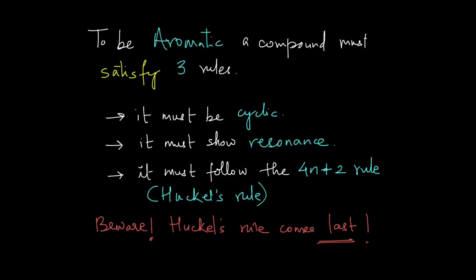To be aromatic, a compound must satisfy these three conditions. It must be cyclic — that means you should be able to see a ring. It must show resonance. And the third condition is it must follow the 4n+2 rule, also known as the Huckel's rule. Many students just see the compound and go for the 4n+2 rule, but please note that this rule comes last. First check that the compound is cyclic, then check that it shows resonance, and only then apply the 4n+2 or Huckel's rule.